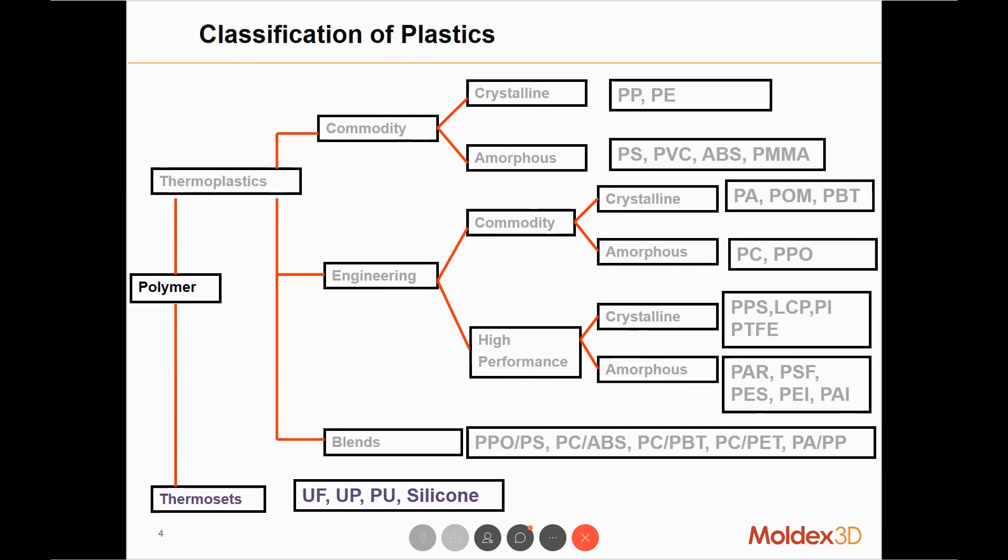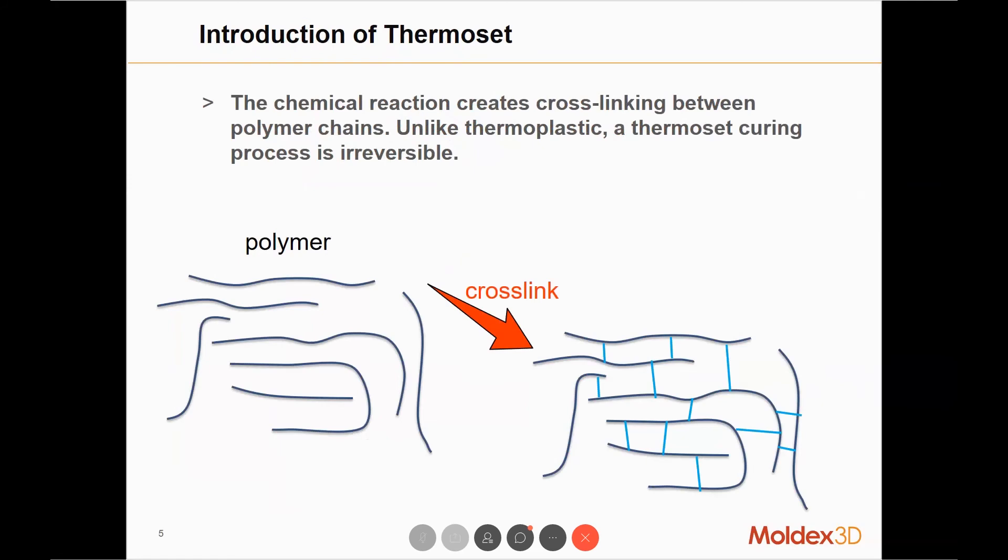The main difference between thermoplastic and thermoset materials is that for thermoset, a chemical reaction takes place which creates crosslinking between the polymer chains. As you can see on the bottom right, the original material's molecular chains are all separated. Once the chemical reaction has taken place, there will be crosslinks between all the polymer chains that connect them all together.